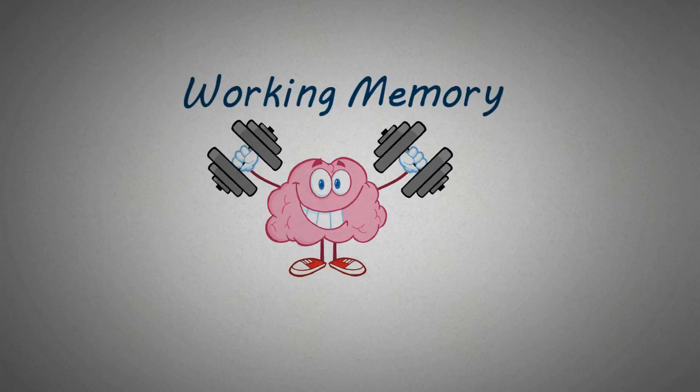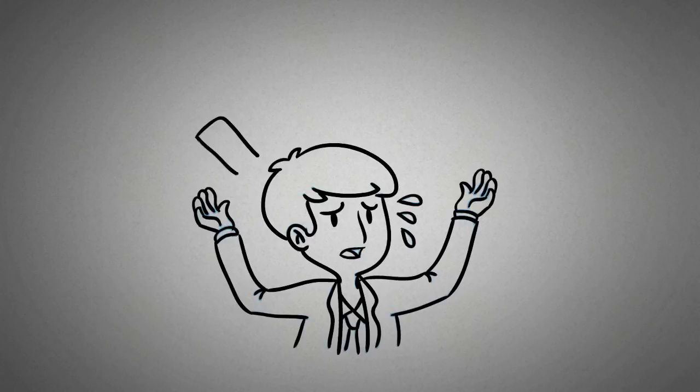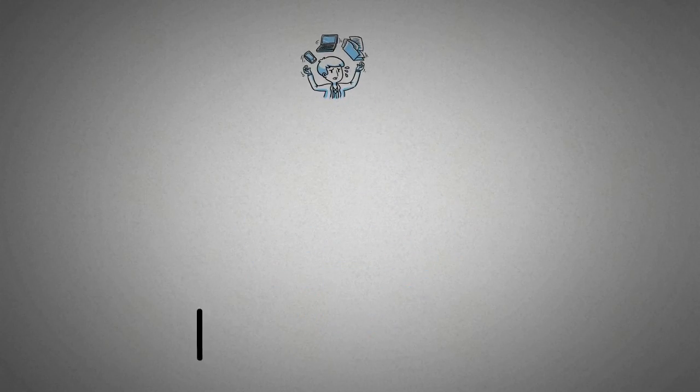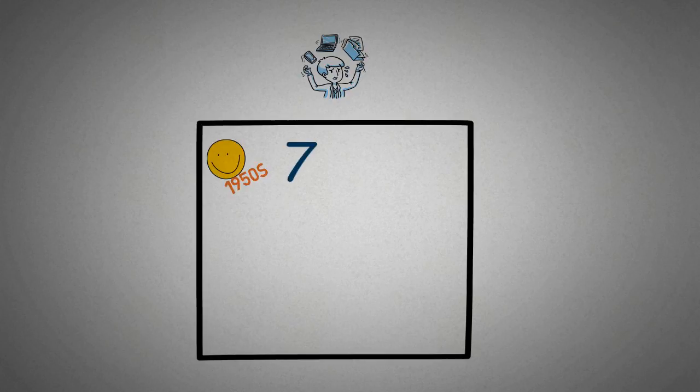So what is working memory? Well, simplistically, working memory is the number of items you can hold on to at any one moment in time. Think of it as a fixed box. In the 1950s, Miller suggested that that fixed box could cope with seven, or it could be five, or it might be as much as nine items of information at any one moment in time.